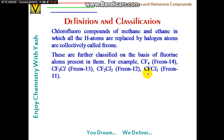Freons are classified based on the number of fluorine atoms. CF₄ is Freon-14 (no hydrogen, four fluorines). CF₃Cl is Freon-13 (no hydrogen, three fluorines). CF₂Cl₂ is Freon-12 (no hydrogen, two fluorines). CFCl₃ is Freon-11 (no hydrogen, one fluorine). The numbering system uses '1' as first digit when no hydrogen is present, followed by the fluorine count.